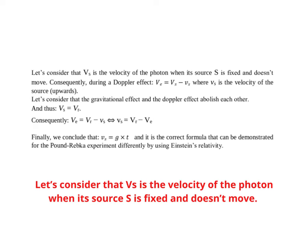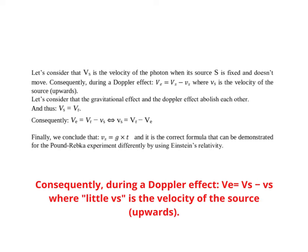Let's consider that vs is the velocity of the photon when its source s is fixed and doesn't move. Consequently, during a Doppler effect, ve equals vs minus little vs where little vs is the velocity of the source, upwards.